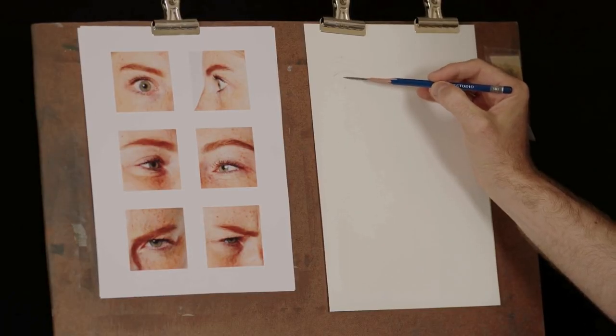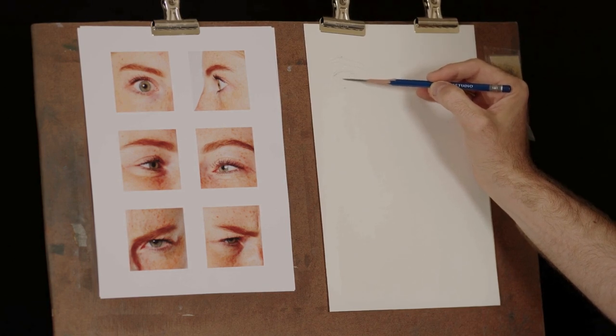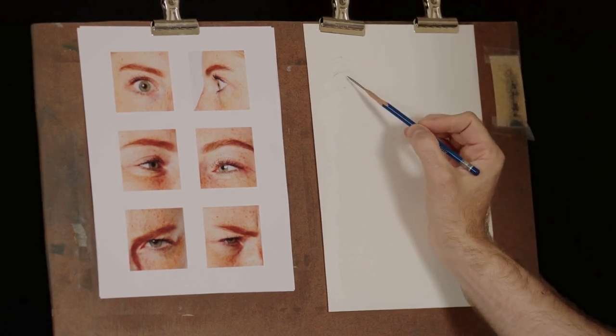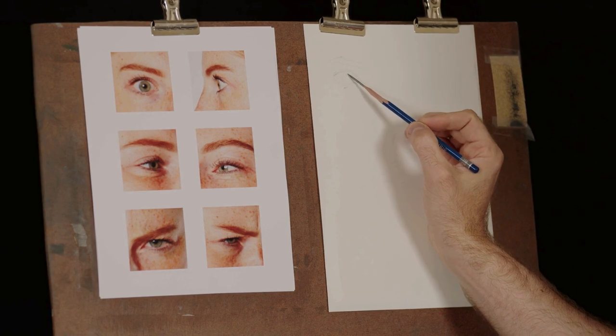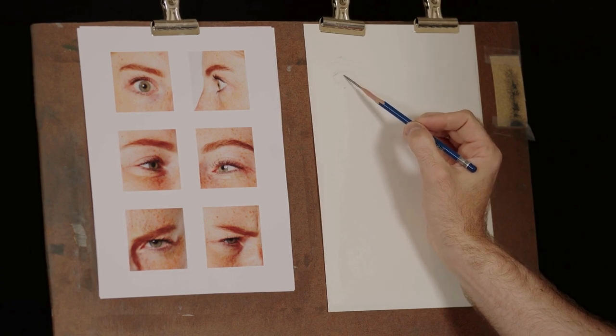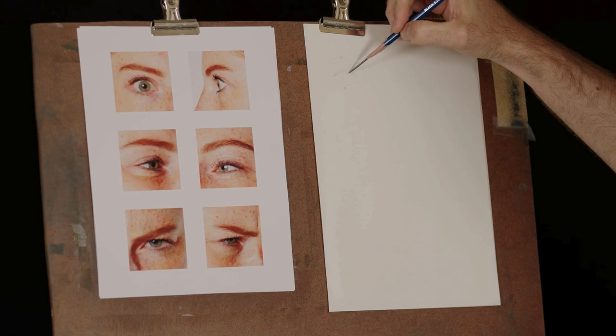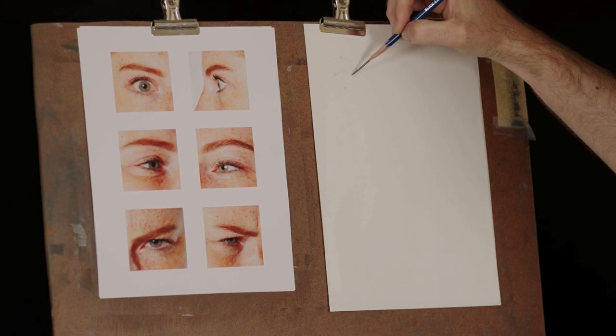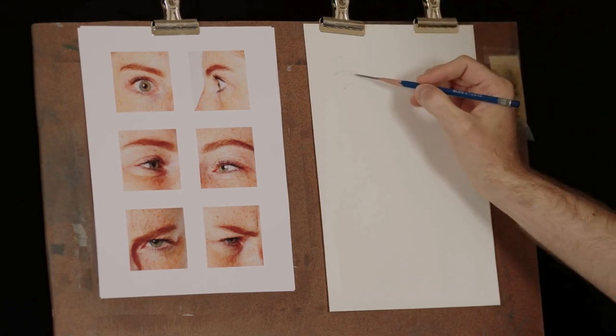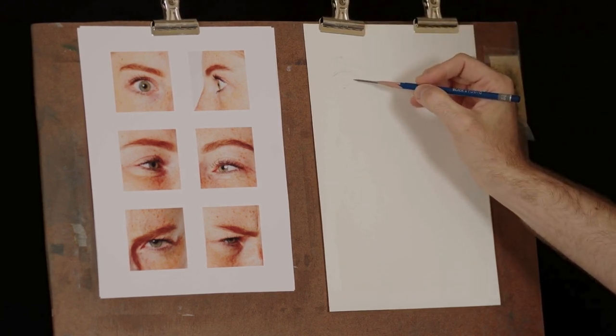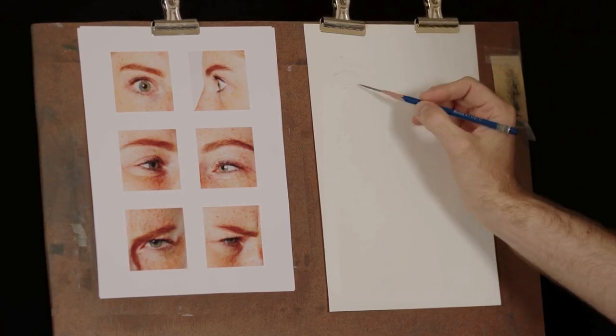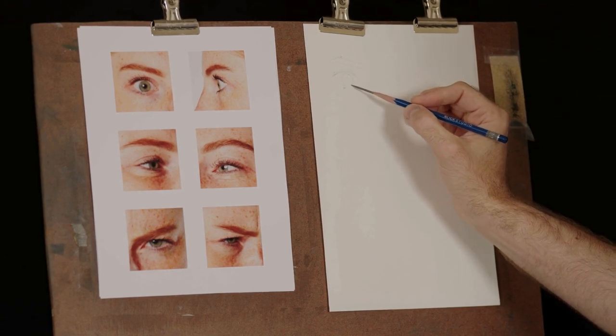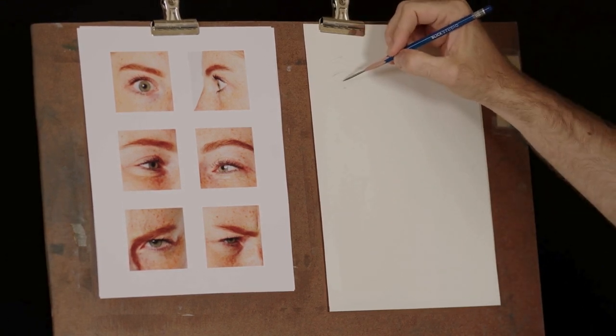Even this iris of the eye, even though it's a circle for the most part, I'm going to break it down into straight lines. And again, the reason we do this is to provide structure to the work. Because as we work on it, we inevitably break down that structure. So the more structure we have in the beginning, the more we can retain for later in the drawing.